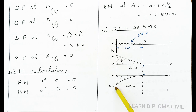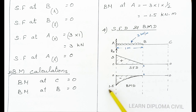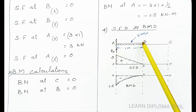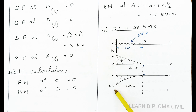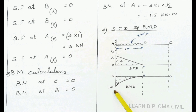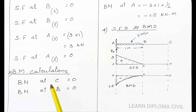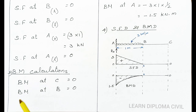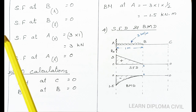A is equal to 0 to minus 1.5 and B is equal to 0. This is the bending moment diagram. Friends, share with your friends. We will see the remaining problems in the next class. Thank you.